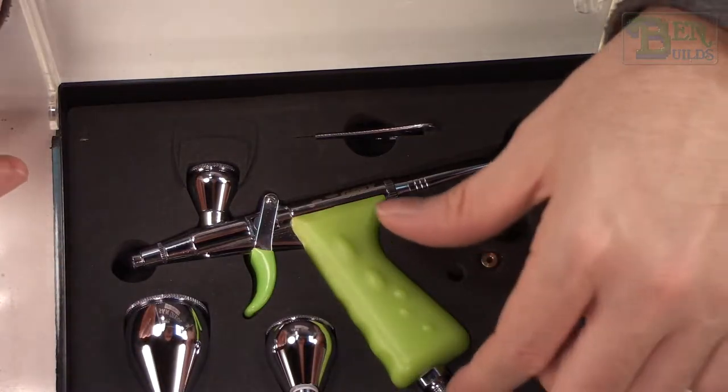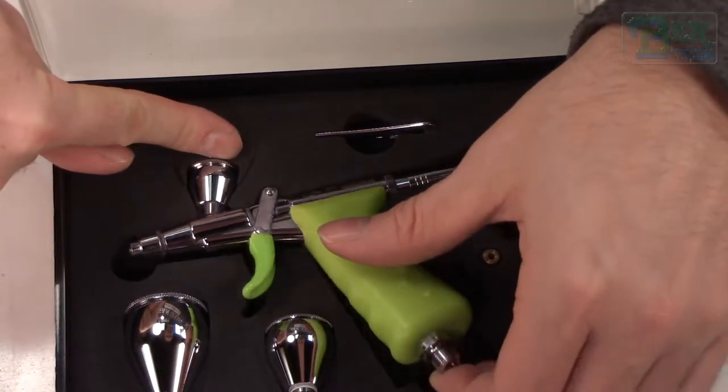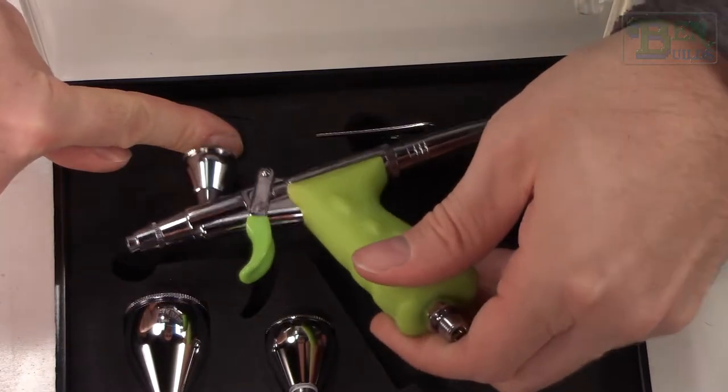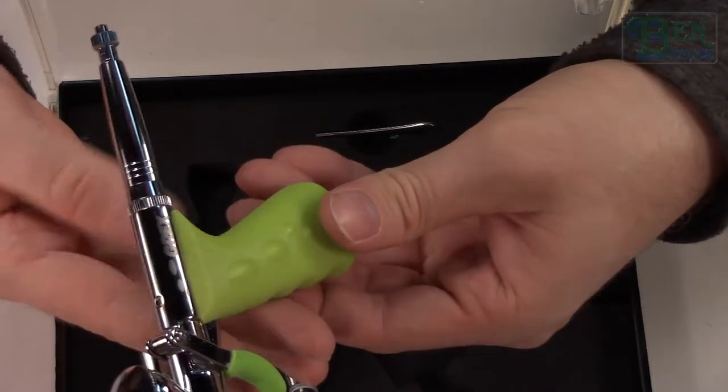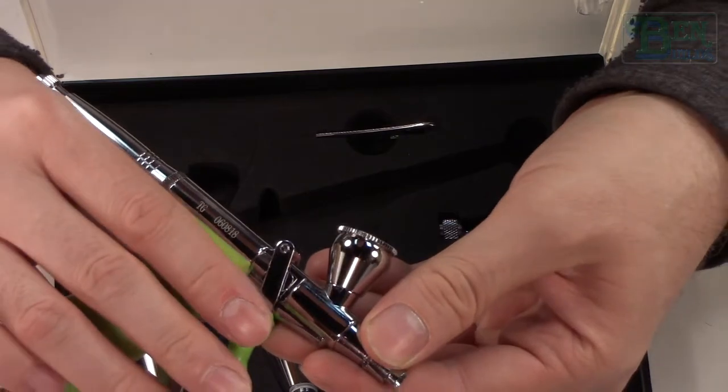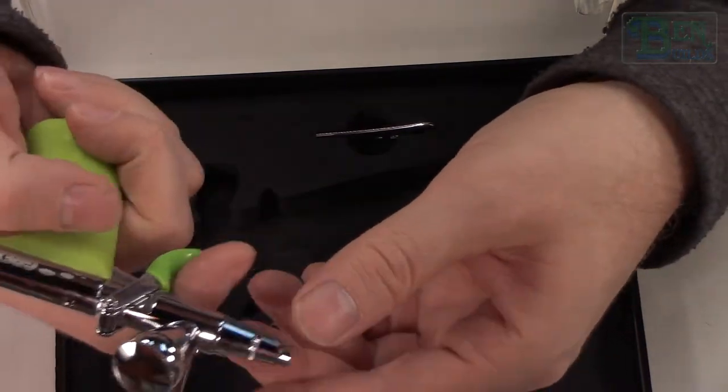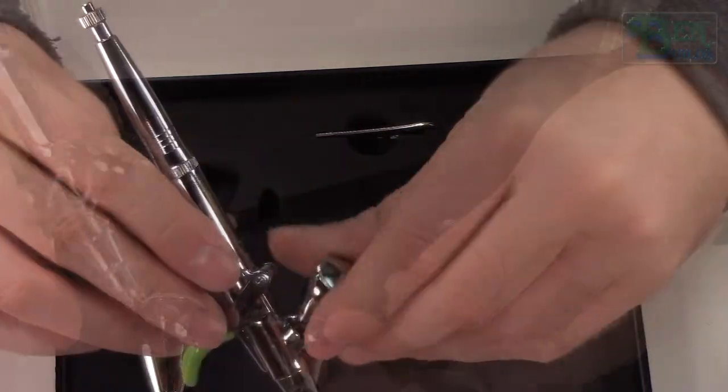There we go, this is how it goes right there. Now looks like it's some form of hose fitting because it is barbed at the end. That's kind of neat. All right, let's pull out the airbrush and take a look at that. Right off the bat, it is hefty. It's quite heavy, much heavier than my Iwata, but a lot more meat to it than my Iwata does.